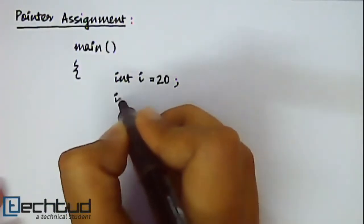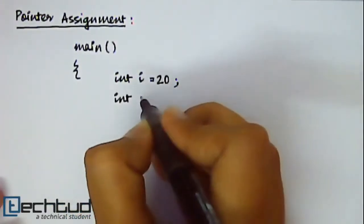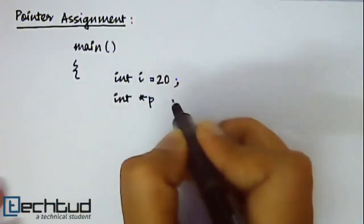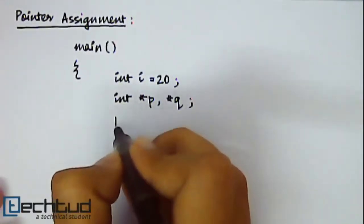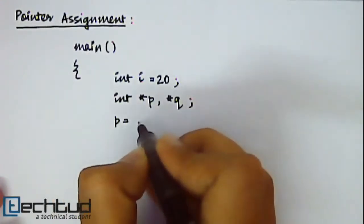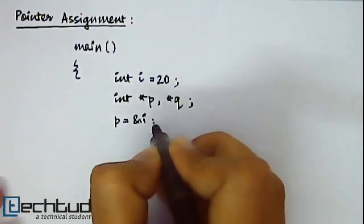Now you are declaring two pointer type of variables. First one is p, second one is q. And let's store the address of variable i inside p.